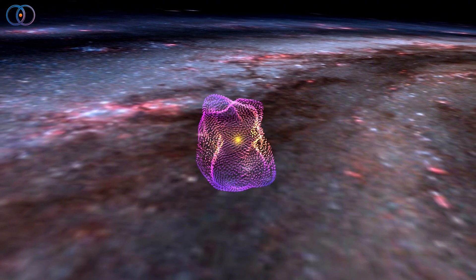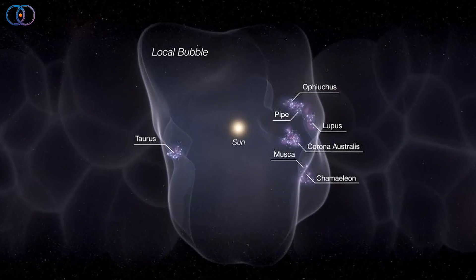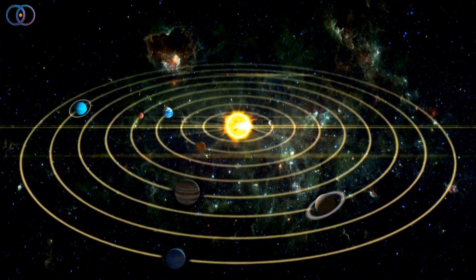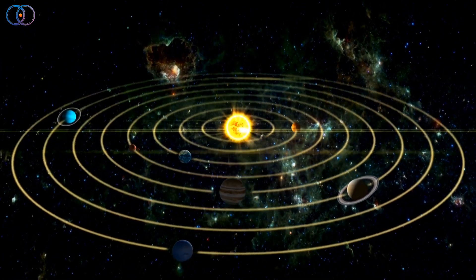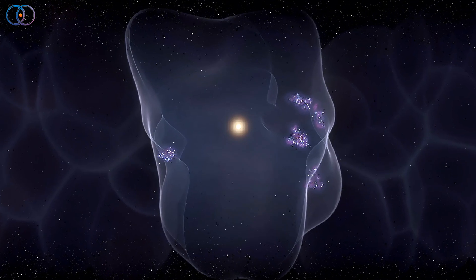The bubble surrounds our solar system completely, and even though it's millions of degrees hot, the gas inside it is so thin that it doesn't burn us or even touch our planets in any noticeable way. That's because there are so few particles in the bubble that the heat can't transfer.